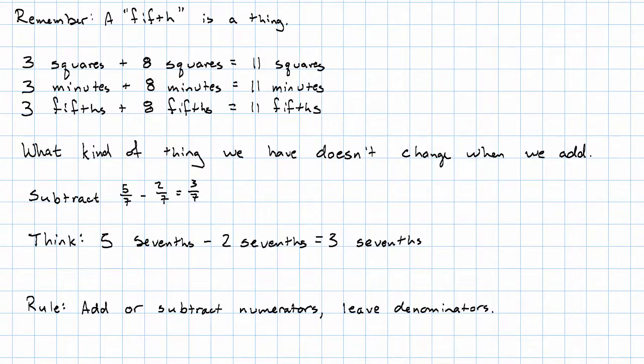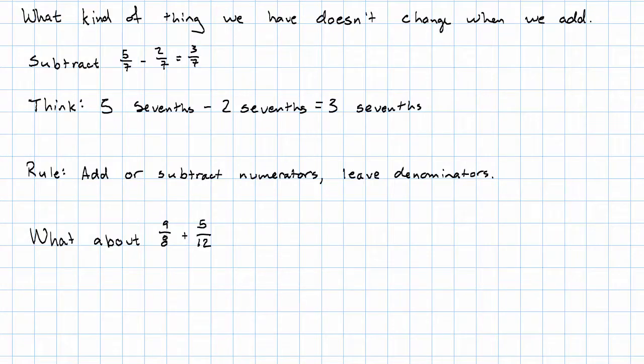But that required that we had the same kind of things. What if we don't have the same kind of things? What if we want to add, for example, 9 eighths plus 5 twelfths? Those are different nouns. We cannot add counts of different kinds of things. We just can't do it. It doesn't make any sense.